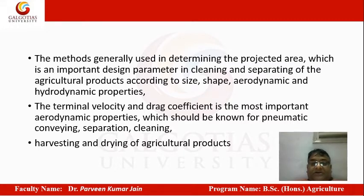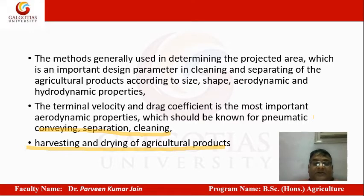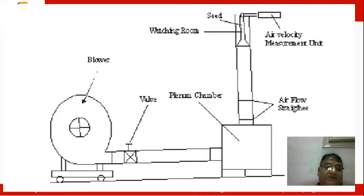Terminal velocity and drag coefficient are the most important aerodynamic properties, and should be known for pneumatic conveyor separation and cleaning. Pneumatic means air-based, so grains are cleaned and separated using air. Harvesting and drying of agricultural products also plays an important role using physical properties. A blower is used in which separation is done with the help of wind.